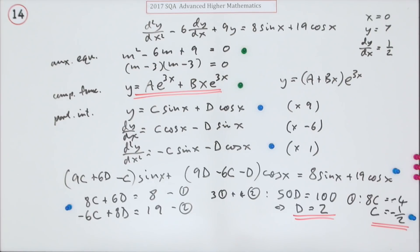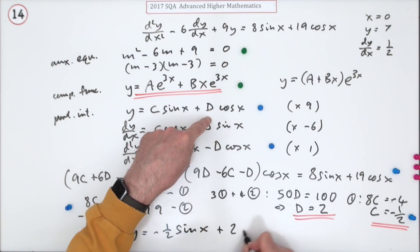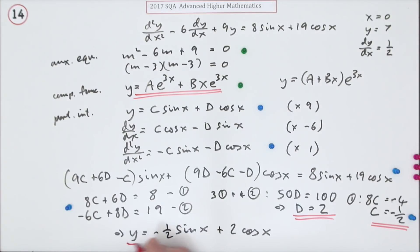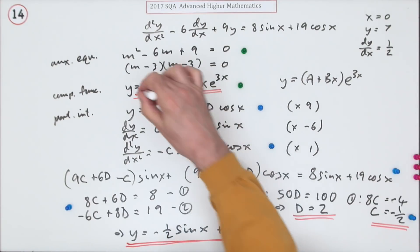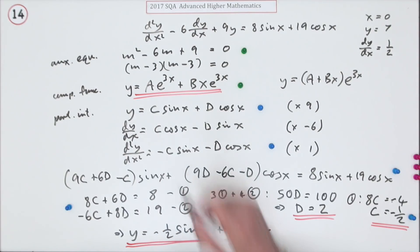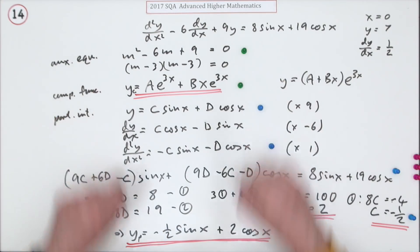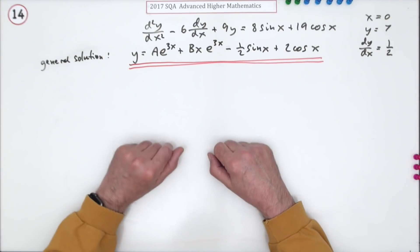So that gives you those marks. Now there's no marks in the marking scheme for stating the particular integral and combining it with the complementary function to make the general solution, so I'm going to finish this bit off. This means that y equals - now that I've worked it out, because I called it C lots of sine, the C was the negative a half, so that's negative a half sin x, and the D is the 2 which is what I called the cos, plus 2 cos x. There's the two parts, the complementary function and the particular integral. Now I need to put them together to form the general solution.